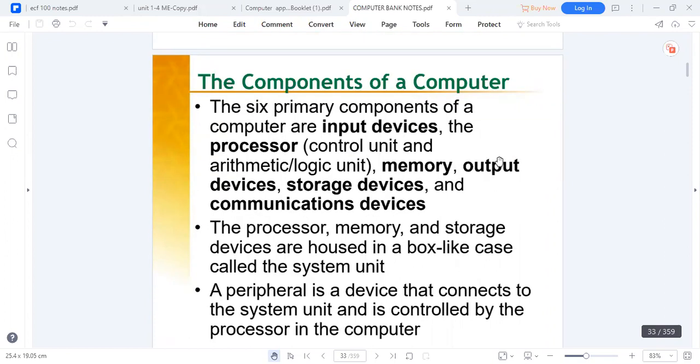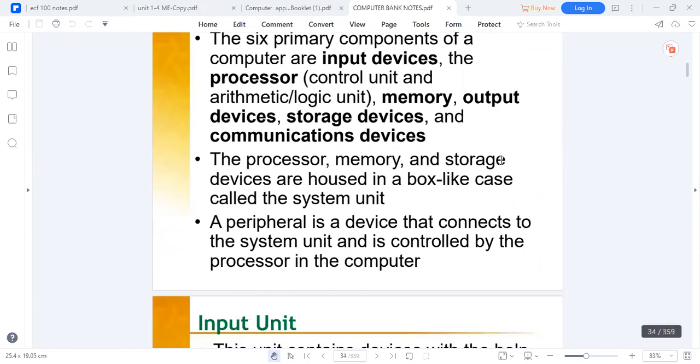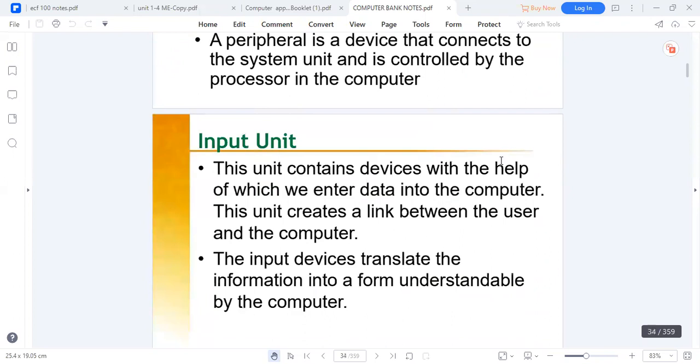The processor, memory, and storage are all housed in a box-like case which we call the CPU. Collectively, we call that the system unit. Peripherals are simply devices that are connected to the computer. These peripherals may include speakers, portable keyboard, and mouse.